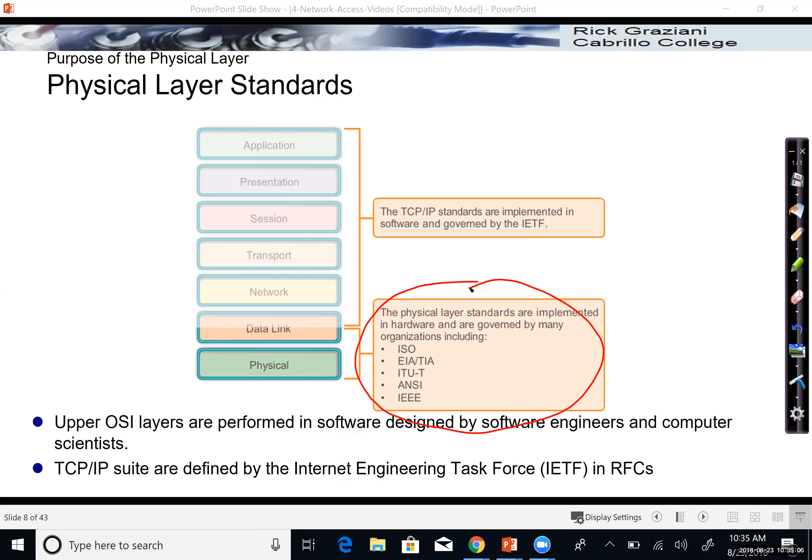So the physical layer standards. As you can see here, the physical layer, we have these different standard organizations. ISO, EIA, TIA, ITU, ANSI, IEEE. These are the ones that you'll see involved in any physical layer standards. For example, Ethernet is an IEEE 802.3 and also an 802.2 standard. Wireless is IEEE 802.11. And we talked about some of these other standard organizations earlier.